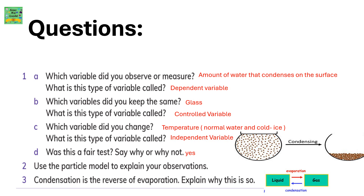Which variable did you change? It was the temperature — because we changed the temperature of the water, using normal water and cold ice water. This is the independent variable. Was this a fair test? Yes — it was a fair test because of the controlled variable.